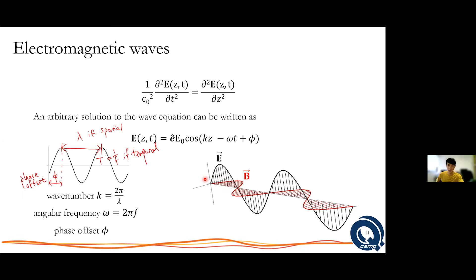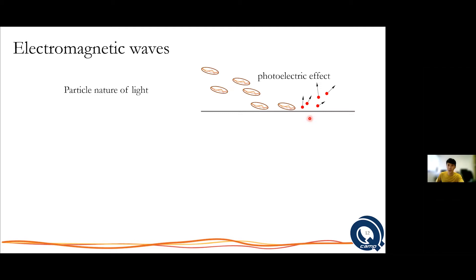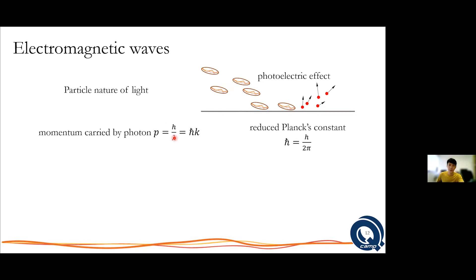To understand laser cooling, we have to look at the other aspect of light: the particle nature. This is very clearly demonstrated when one looks at the photoelectric effect. The main point is that light can also behave like little balls — it can impart momentum. It carries momentum h over lambda, or h-bar k, where k is the wave number. It also has energy hf — where f is literally the frequency of the electric field oscillation.